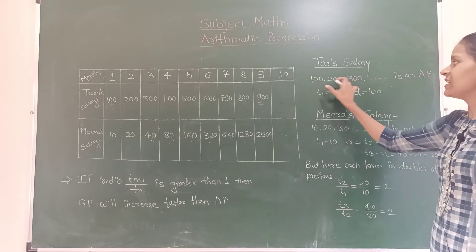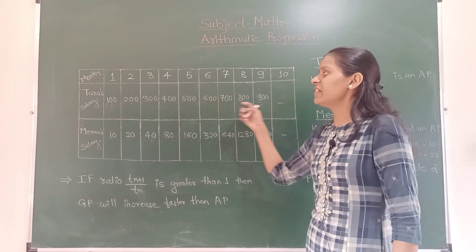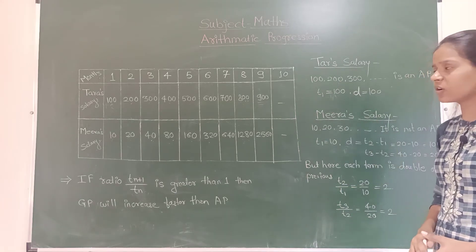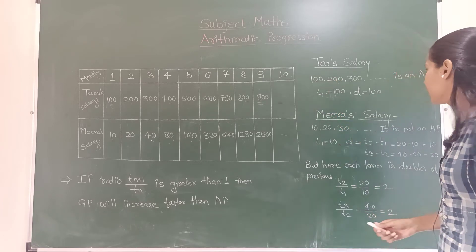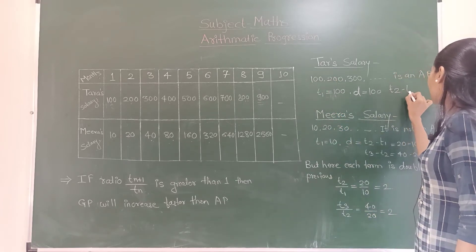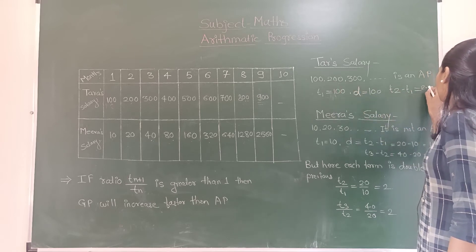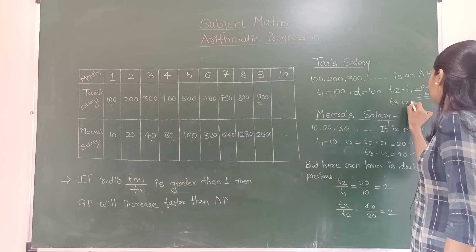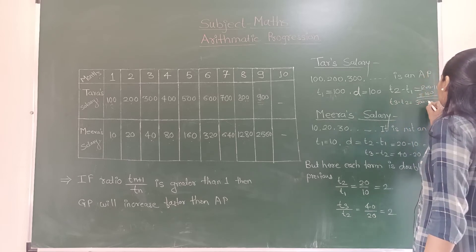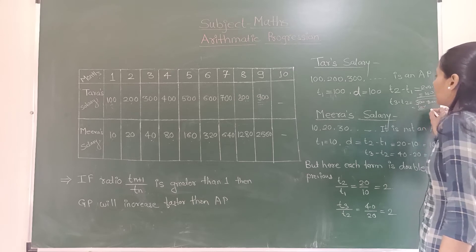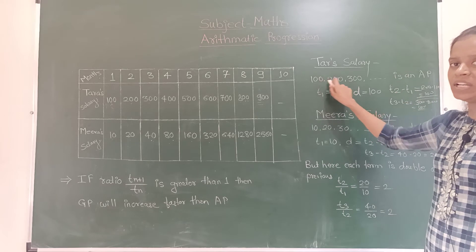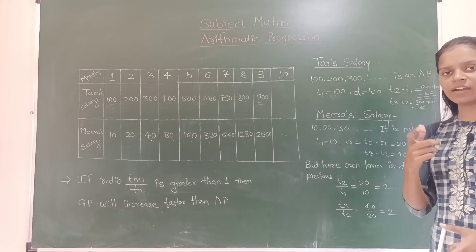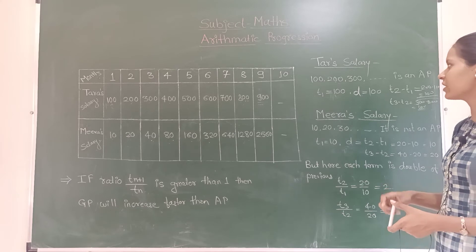Tara's salary sequence is an arithmetic progression. Why? Because the common difference between two consecutive terms is the same. T2 minus T1 equals 200 minus 100, which is 100. T3 minus T2 equals 300 minus 200, which is again 100. So the common difference is constant at 100. This is an arithmetic progression.